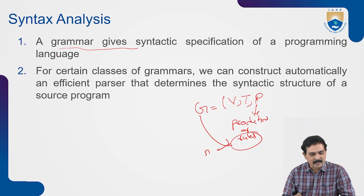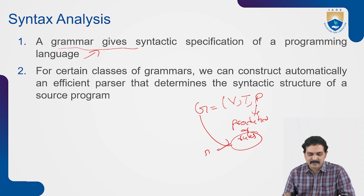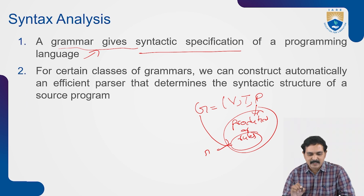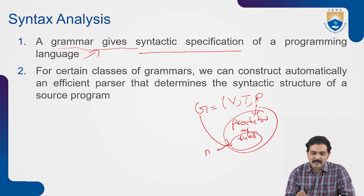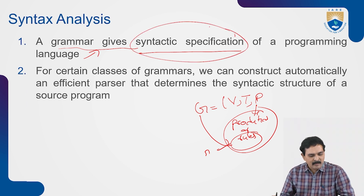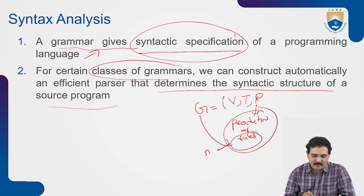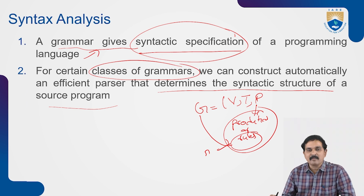A grammar gives a syntactic specification of your programming language. The syntactic specification is defined with the help of a set of productions or set of rules. These set of productions tell us exactly whether a particular programming language statement follows a particular syntactic structure. For certain classes of grammar — for example, CFG (Context-Free Grammar) — we can construct an efficient parser automatically.